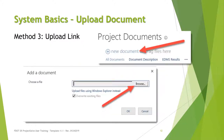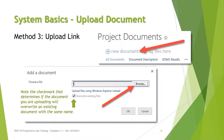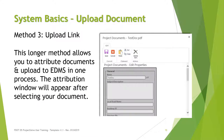The third and most conventional way to upload a file is to use the New Document link. When you click on that link, a box will open that will allow you to browse for the document on your computer. Select the file and then hit OK to upload. Note the checkmark that determines if the document you are uploading will overwrite an existing document with the same name. An advantage to using the upload link method is the ability to attribute the documents and upload them to EDMS in one process.